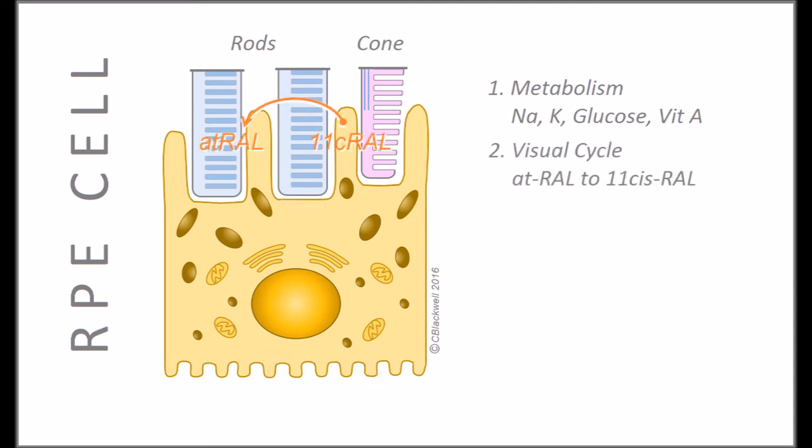Second, recycling of the key photosensitive chemical retinal from the inactive all-trans form to the active 11-cis form. This process is called the visual cycle.